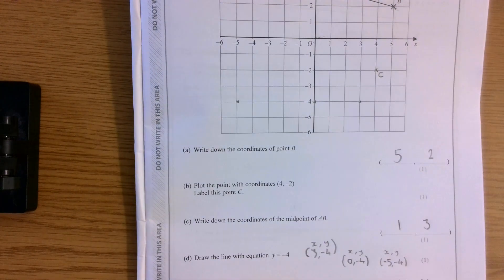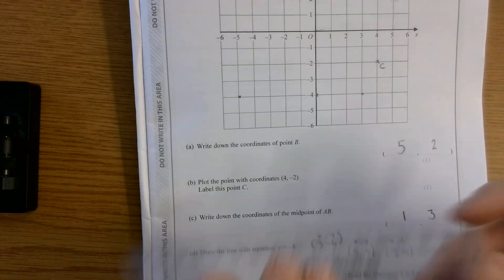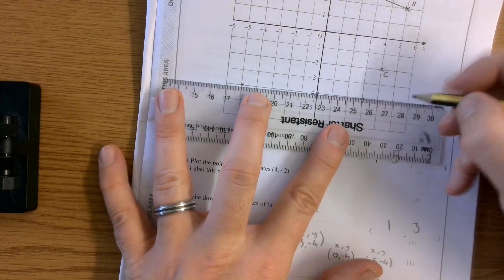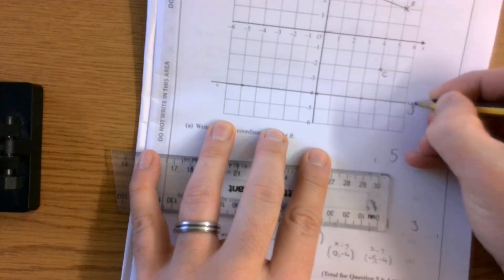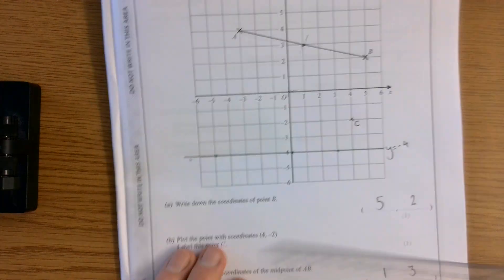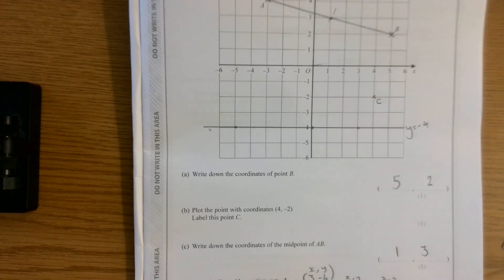And I've got negative 5, negative 4. All of those things have got something in common. The y value is always negative 4. So that's why that line is called y equals negative 4.